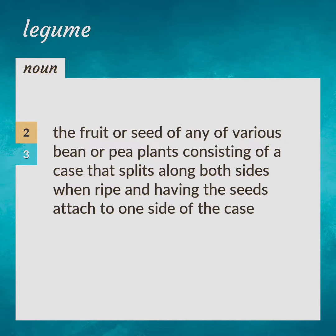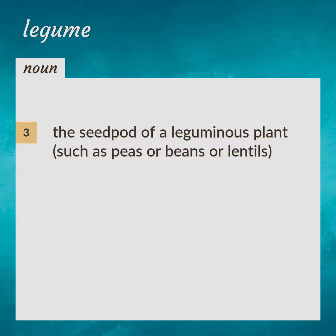The fruit or seed of any of various bean or pea plants, consisting of a case that splits along both sides when ripe and having the seeds attached to one side of the case. The seed pod of a leguminous plant, such as peas, beans, or lentils.